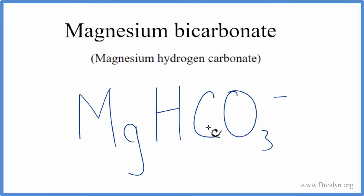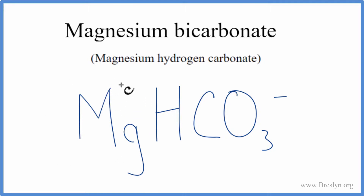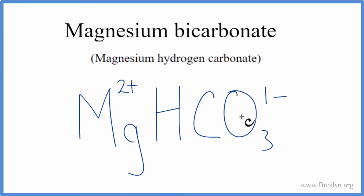We have a metal and non-metals, so we have an ionic compound, and we need to think about the charges. We want them to add up to zero to give us a net charge of zero. Magnesium is in group two on the periodic table, giving it a two plus ionic charge. The hydrogen carbonate ion is one minus. Right now these don't add up to zero, but we can change the subscripts to make that happen.